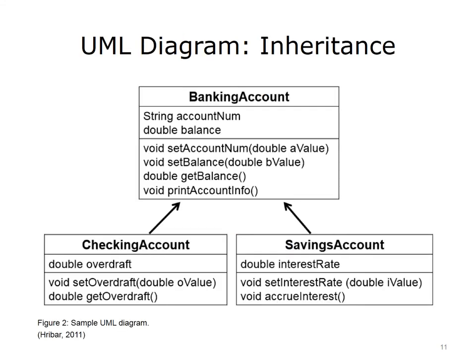Here's a sample UML diagram that shows inheritance. In this diagram, the base class or parent class is the banking account class. It has two instance variables defined — one for the account number and the other for the balance of the account. It also has four methods: one to set the value of the account number, another to set the value of balance, a third to get the value of balance, and a fourth method to print all the account information to the screen. There are two child classes — checking account and savings account — which inherit all the methods and instance variables from their parent banking account.